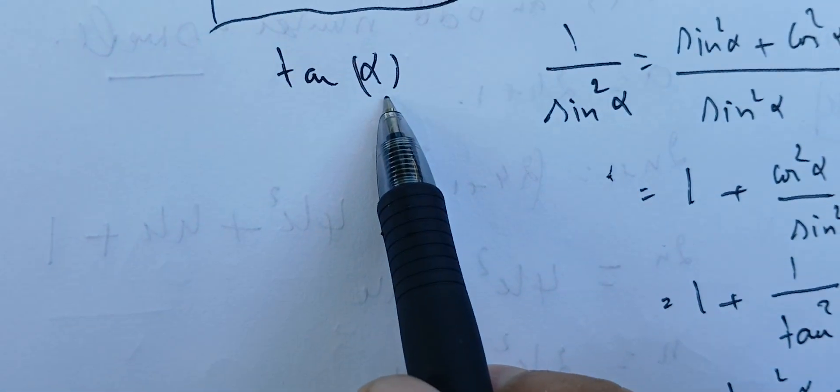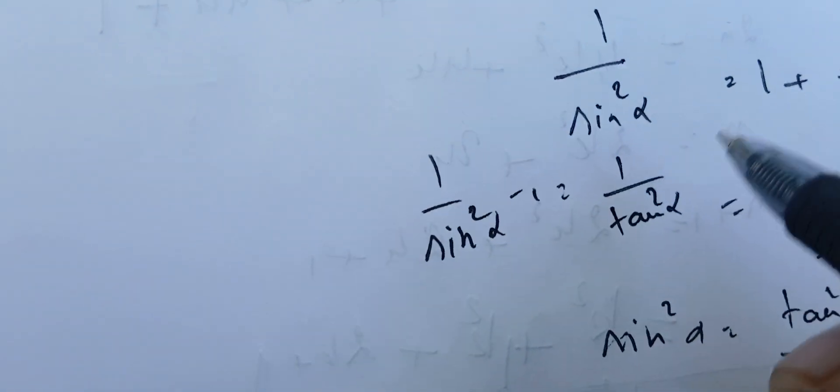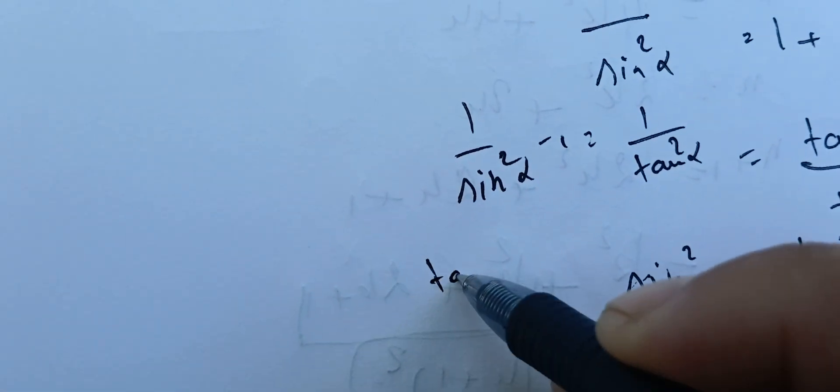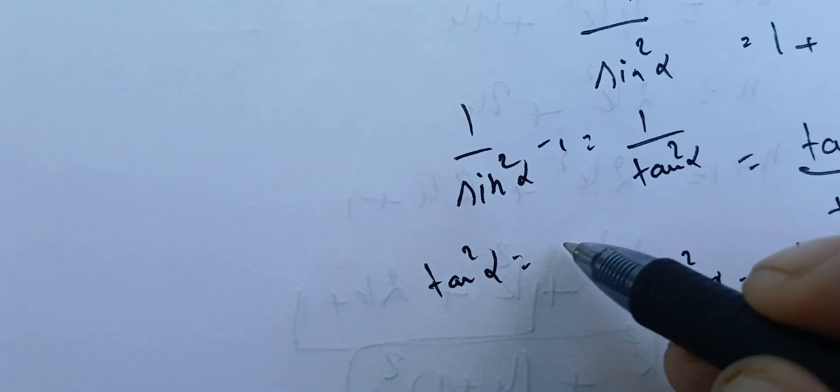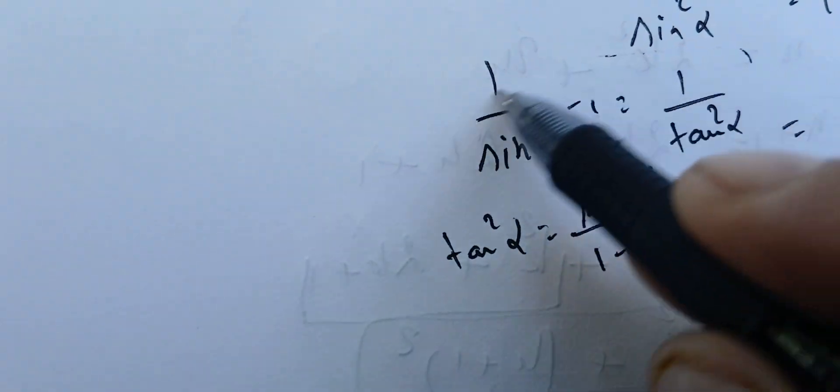Flipping 1/sin²(α), we get sin²(α) = tan²(α) / (1 + tan²(α)). We want to find tan(α), so let's rearrange. Adding −1 to both sides of 1/sin²(α) = 1 + 1/tan²(α) gives 1/sin²(α) − 1 = 1/tan²(α). This means tan²(α) = sin²(α) / (1 − sin²(α)).